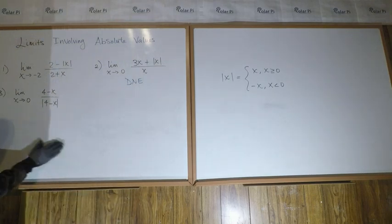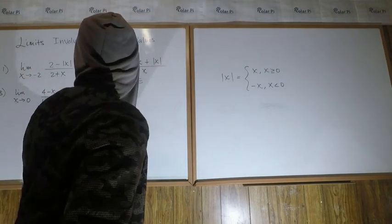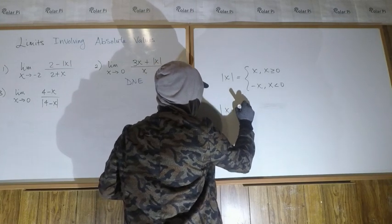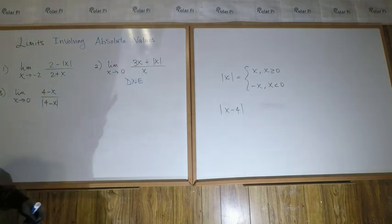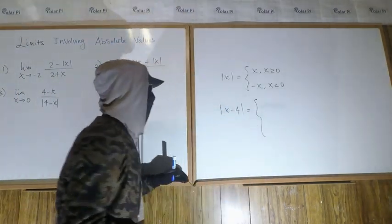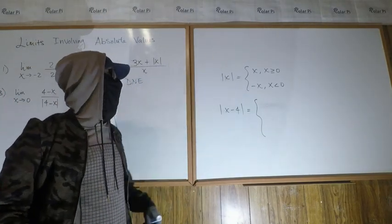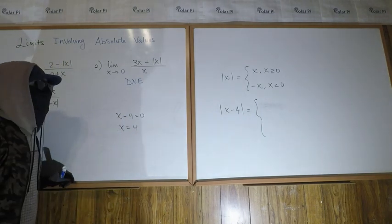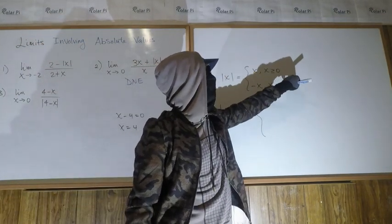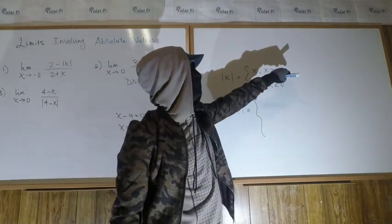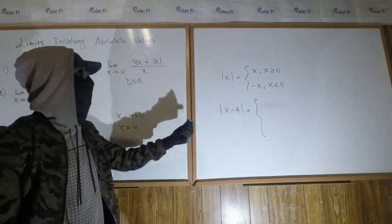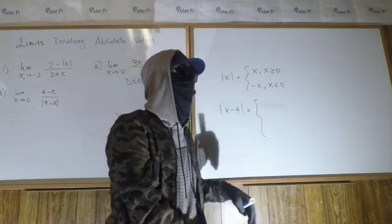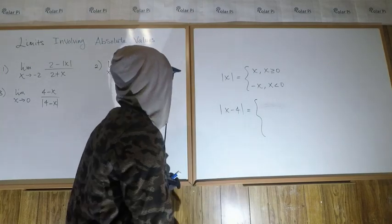Saved the best for last. Now we need to focus on the absolute value of (4 minus x). To be helpful, let's first do the absolute value of (x minus 4). When it's not simply the absolute value of x, you take the inside and set it equal to zero. Setting x minus 4 equal to zero gives x equals 4, which means the piecewise function breaks over 4 instead of 0.